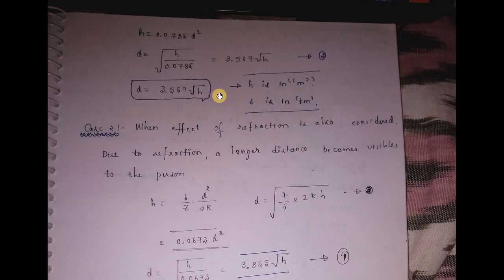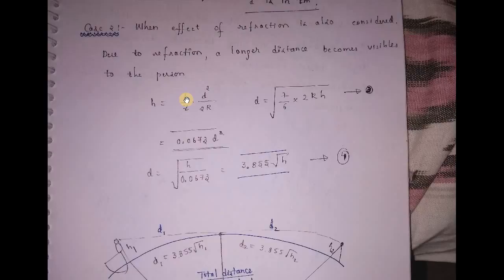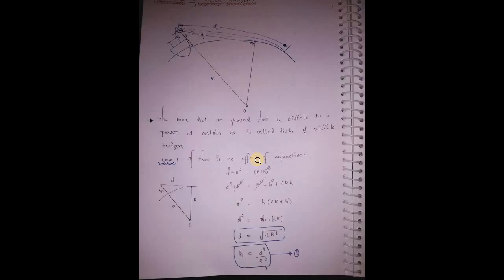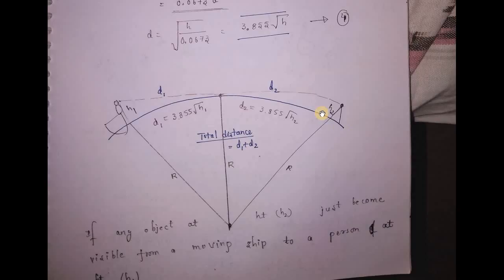When the effect of refraction is also considered, a longer distance becomes visible. With refraction considered, D equals 3.85 into root H. So for two heights H1 and H2, the distances are 3.85 into root H1 and 3.85 into root H2 respectively.